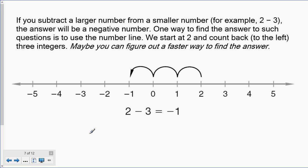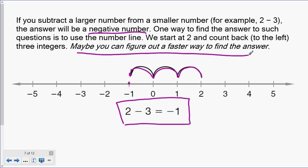Now let's talk about subtraction here with regards to negative numbers. If you subtract a larger number from a smaller number, for example, two minus three, so you're taking away more than you have, your answer will be a negative number. One way to find the answer to such questions is to use the number line. So think about two minus three again. If we start at two and we count back three because we're subtracting, so we're going to the left. One, two, three, you arrive at negative one. So two minus three equals negative one. That is correct because we should have a negative answer. We are taking away more than we had to begin with.